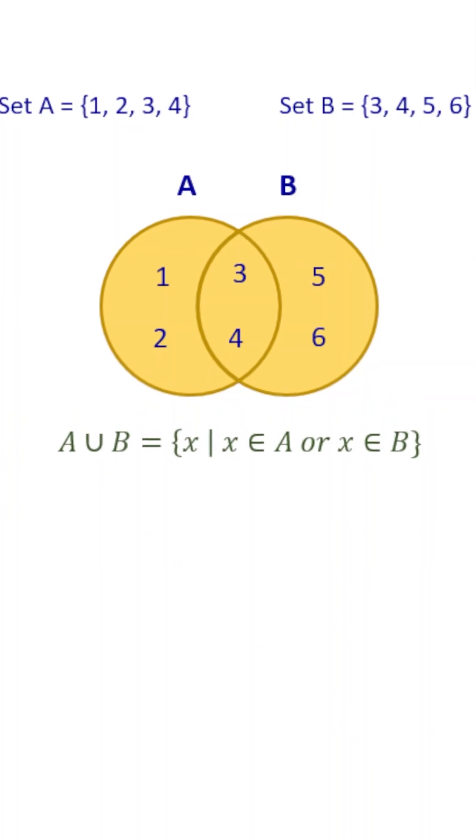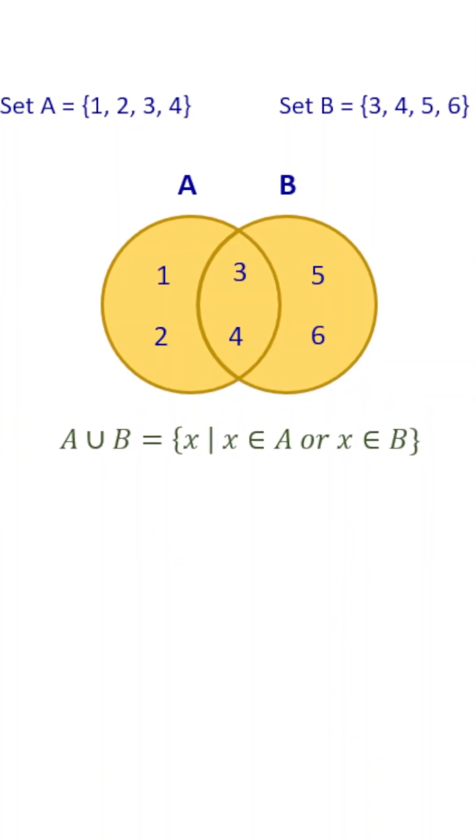In set builder notation, the union includes all elements X, such that X is a member of A or X is a member of B.